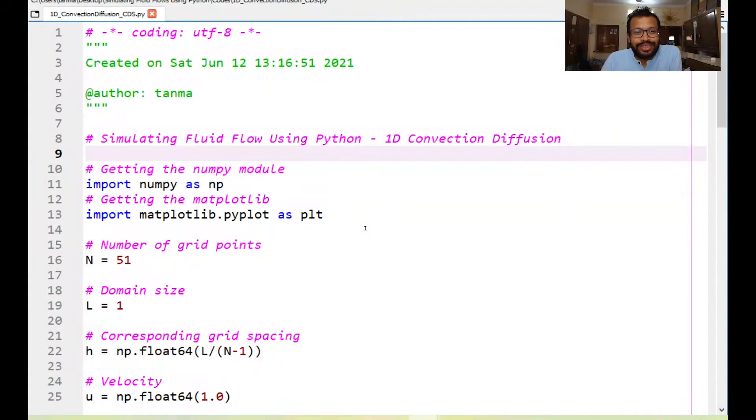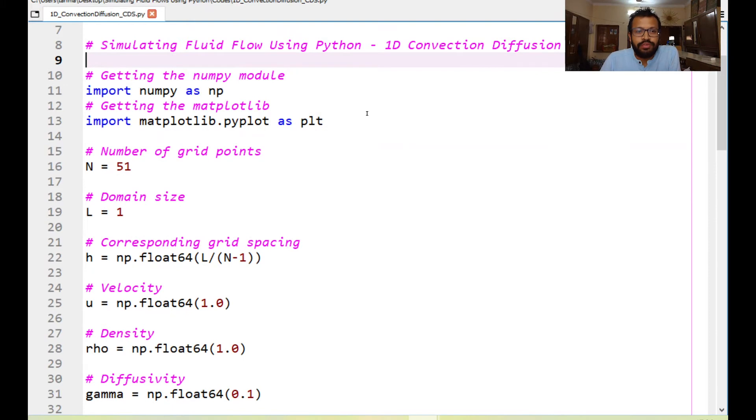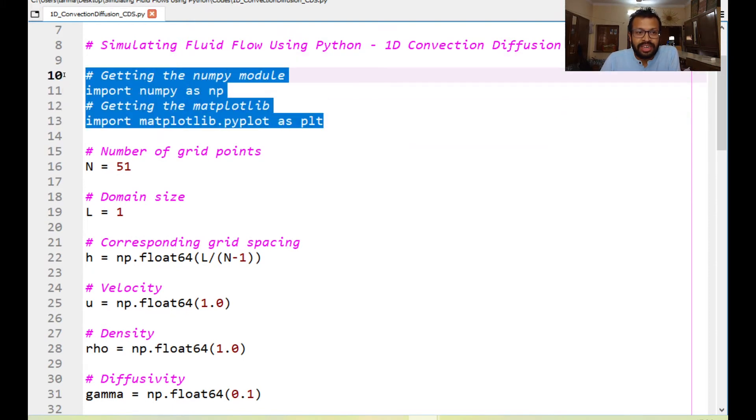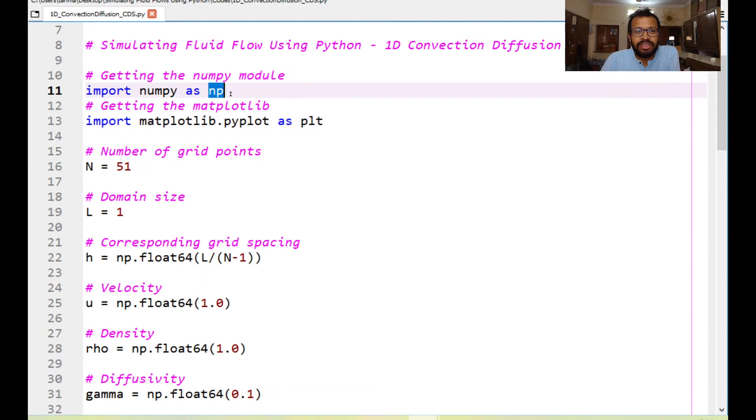So the code that you are seeing right now that would be able to solve the 1D convection diffusion scenario. So it is quite similar to 1D conduction problem where we looked at the central differencing scheme with a generalized perspective. As usual we always start by importing the required modules and in this case we need the numpy and the matplotlib libraries for the pyplot. So here I've imported them as np and plt as usual.